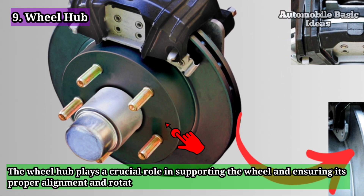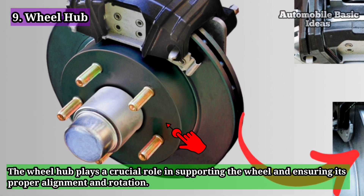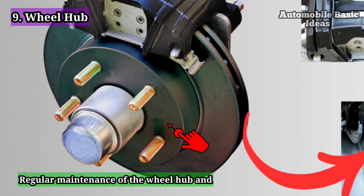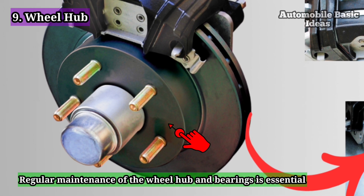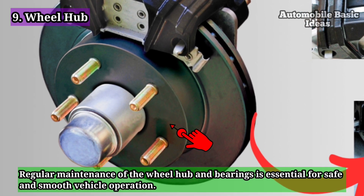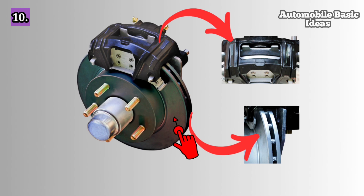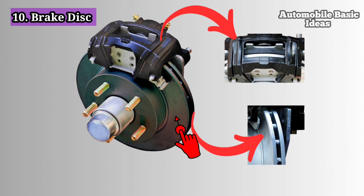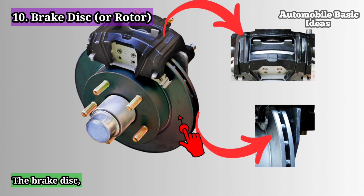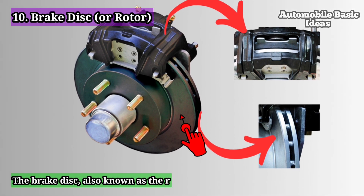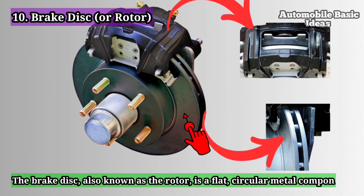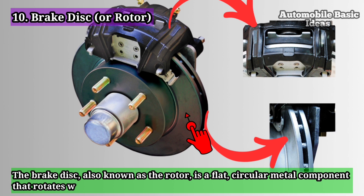The wheel hub plays a crucial role in supporting the wheel and ensuring its proper alignment and rotation. Regular maintenance of the wheel hub and bearings is essential for safe and smooth vehicle operation. Ten: brake disc or rotor. The brake disc, also known as the rotor, is a flat circular metal component that rotates with the wheel.